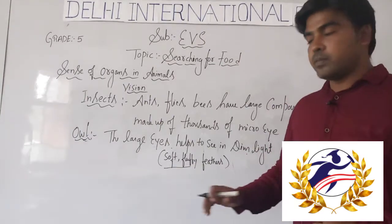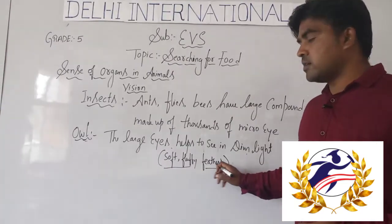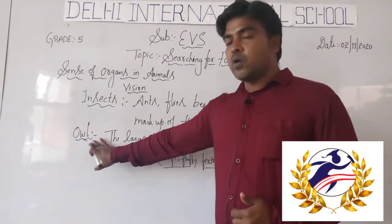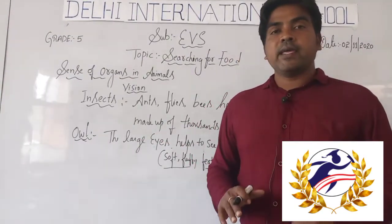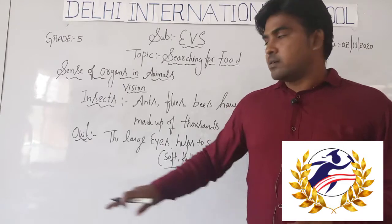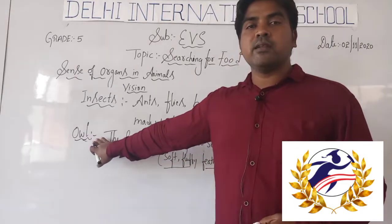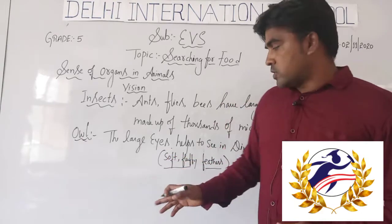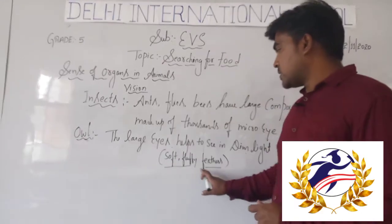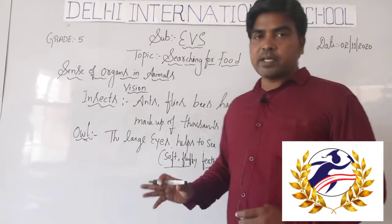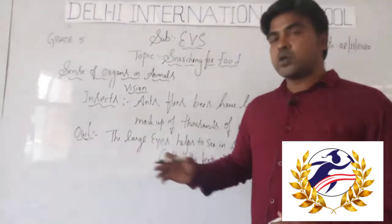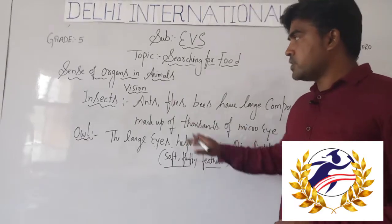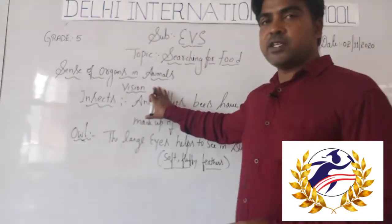The owl also has very soft, fluffy feathers. These soft and fluffy feathers help the owl to fly very silently — it can maintain extreme silence while flying. These fluffy feathers help the owl to catch its prey, especially in the night.